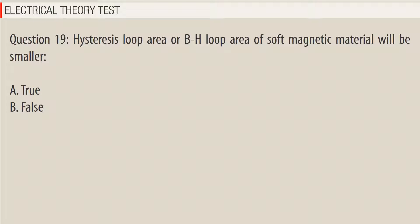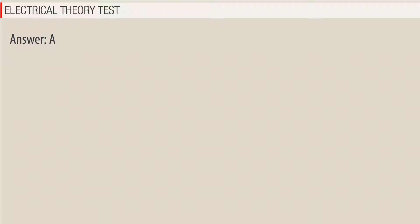Question 19. Hysteresis loop area (BH loop area) of soft magnetic materials will be smaller. a. True. b. False. Answer: A.